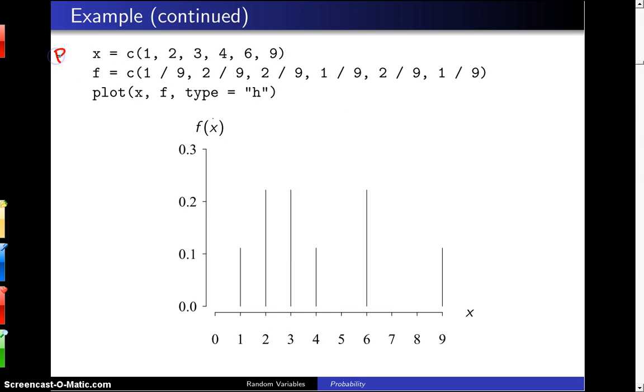To draw a graph of this probability mass function, here is some R code. The vector x gets set to the support values 1, 2, 3, 4, 6, and 9. The vector f gets set to the probability mass function values we calculated on the previous page. And then the plot command with the argument type equals h will plot these as spikes.